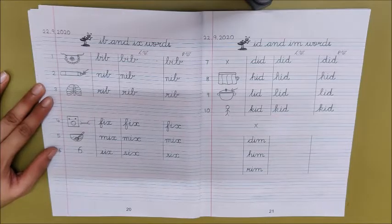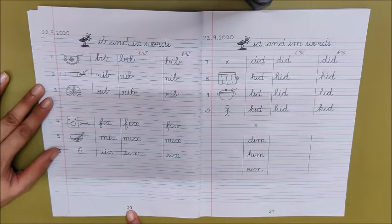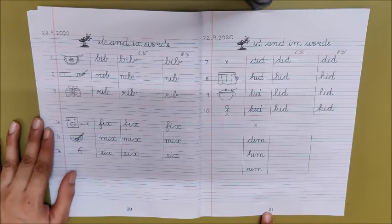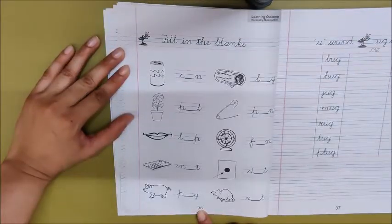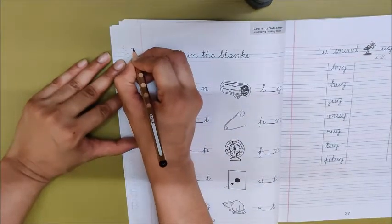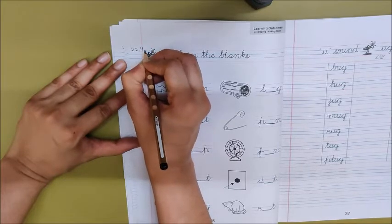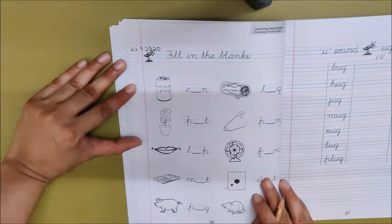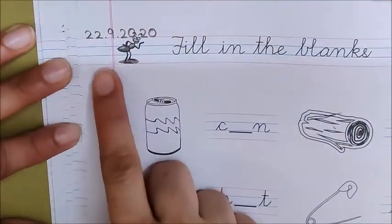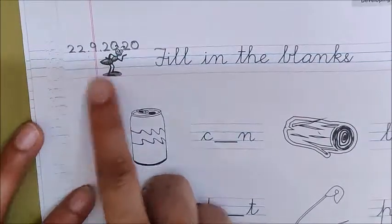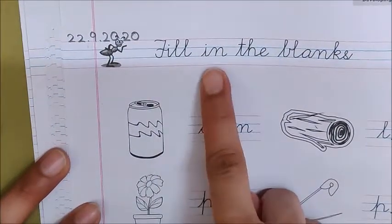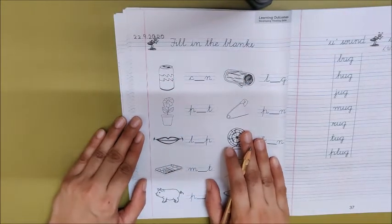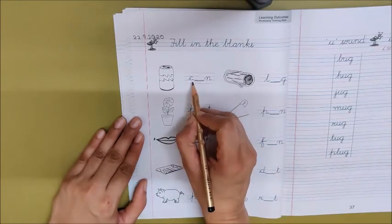Children, our work is not over. We have done pages 20 and 21. Now, we will do one more page. Open page number 36. This is page number 36. So, quickly write down today's date. 22 dot, 9 dot, 20, 20. See, I have written the date here. Now, what do you have to do on this worksheet? Fill in the blanks. What do you have to do here? You have to look at all the pictures, name them and then complete the word.